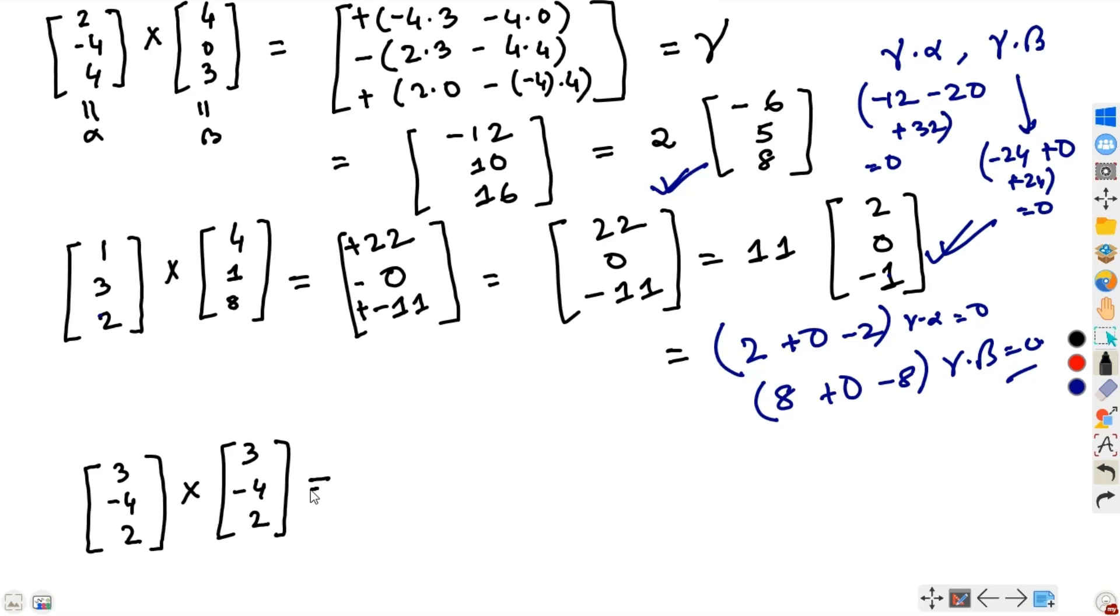Let us look at this example. Observe that here, both vectors are equal. If we assume this as alpha, then we are computing alpha cross alpha, the cross product of a vector with itself. We have seen the dot product of a vector with itself, but there is an interesting observation in this case.